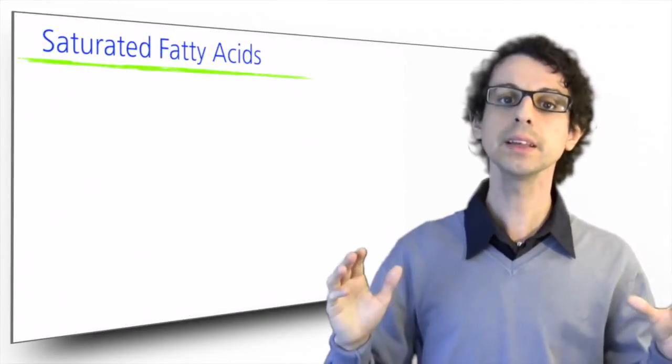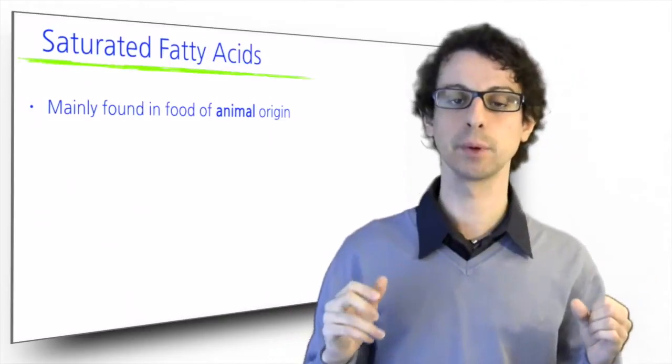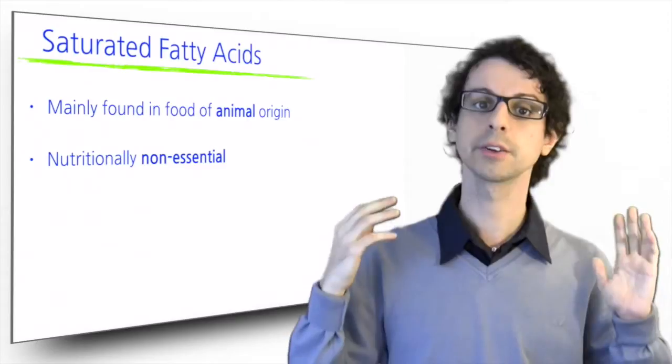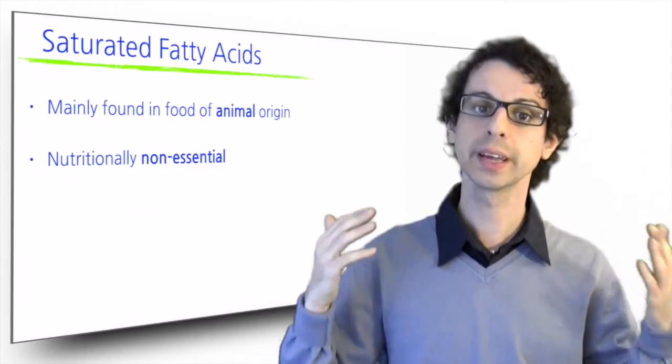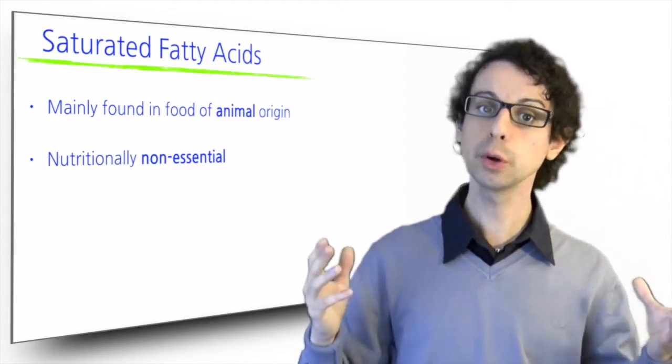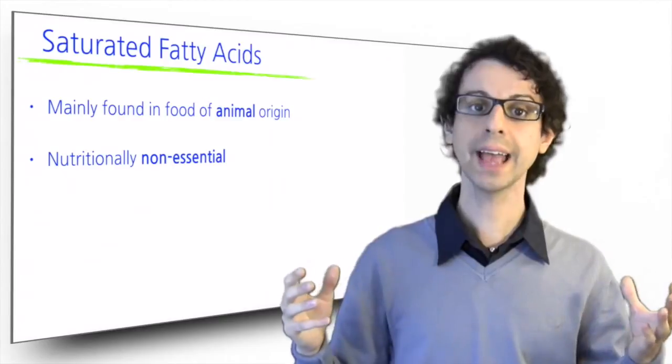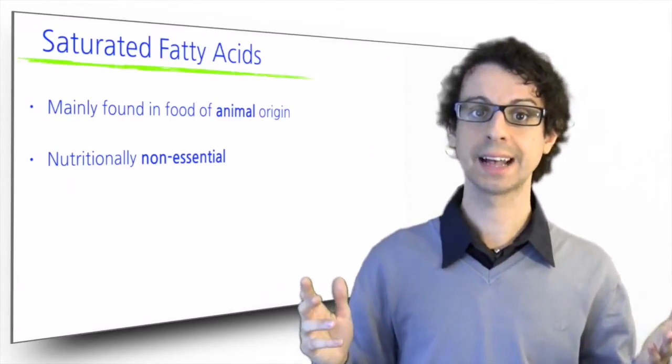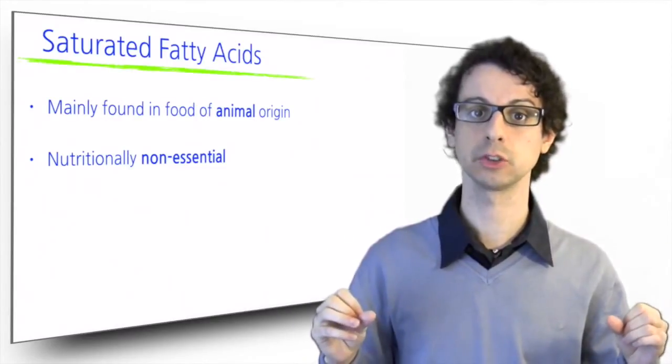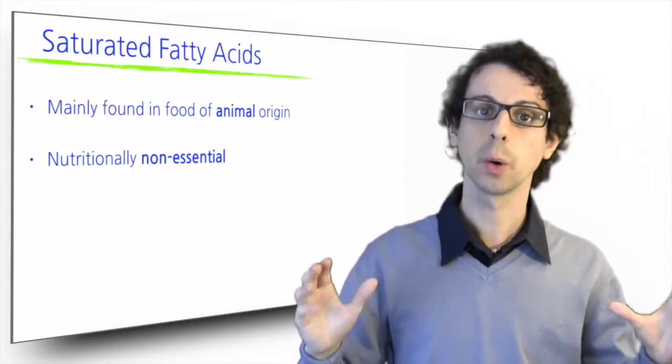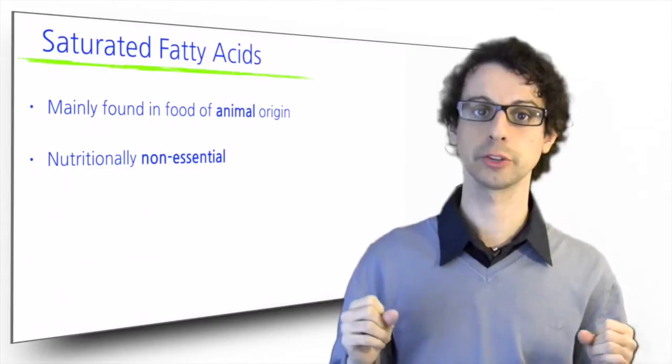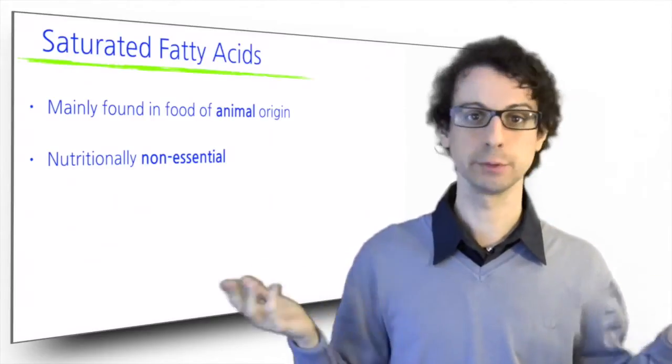Saturated fatty acids are mainly, although not exclusively, found in food of animal origin. They are nutritionally non-essential. Remember, this doesn't mean that they're not important, just that if necessary we can build them ourselves. Our body can build saturated fats from glucose and from some amino acids. Stearic acid, the saturated fatty acid 18 carbons long, is preferentially incorporated into triglycerides for storage in adipose tissue. Based on what you know, you should be able to figure out why it wouldn't be possible to use unsaturated fats for storage. At body temperature, they would melt.